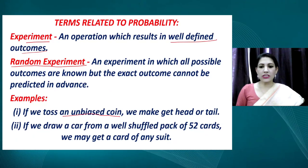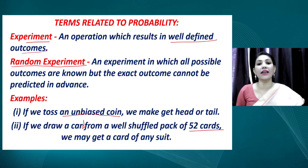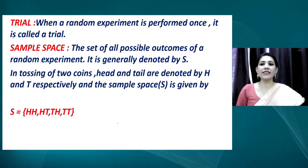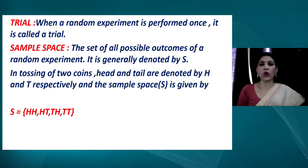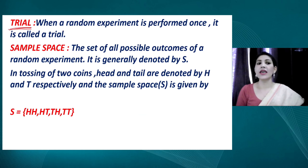For example, if we toss an unbiased coin, we can get a head or a tail. If we draw a card from a well-shuffled deck of 52 cards, the card can be of any suit, any color — black or red — or any value like king or ace. Such a performance of a random experiment is called a trial.